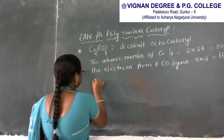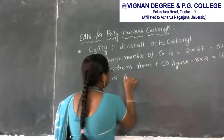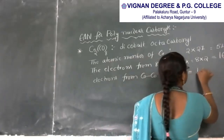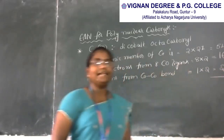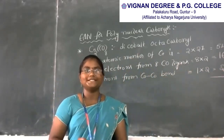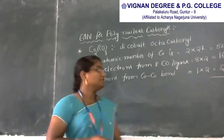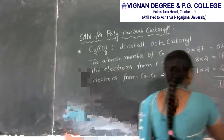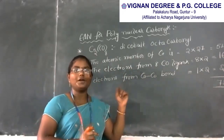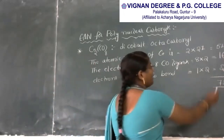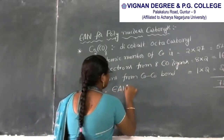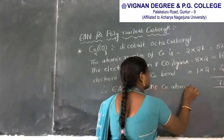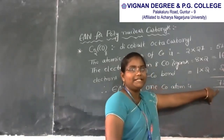Next we consider electrons from the cobalt-cobalt metal bond. In dicobalt octacarbonyl there is one metal-metal bond, which contributes 2 electrons. So the sum of all electrons is 54 plus 16 plus 2 equals 72. This is the effective atomic number for dicobalt octacarbonyl for two cobalt atoms. Therefore EAN for one cobalt atom is 72 divided by 2, which is 36.